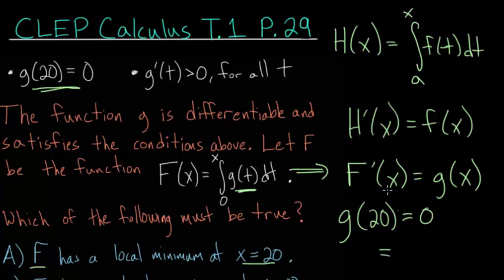but this would also be equal to the derivative of F at x equals 20, since the derivative of F and g of x are equal to each other. So essentially, the derivative of F evaluated at 20 gives us 0.